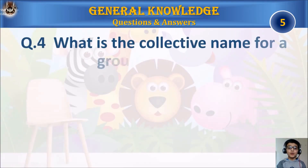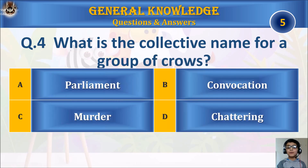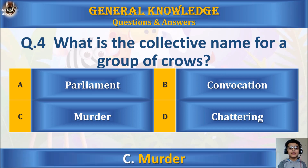Question 4: What is the collective name for a group of crows? A) Parliament, B) Convocation, C) Murder, or D) Chattering? Your time starts. The answer is C) Murder.